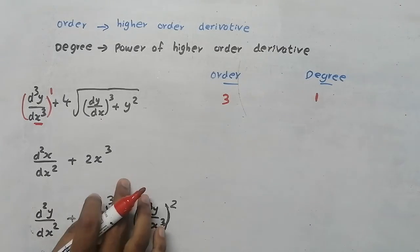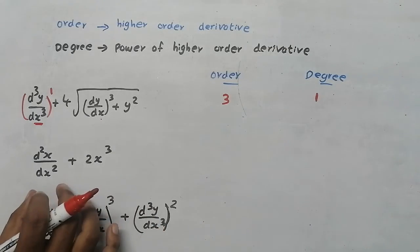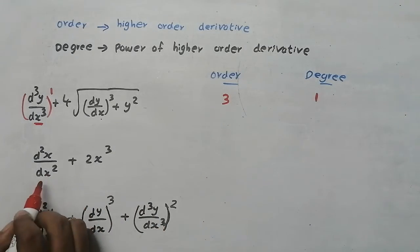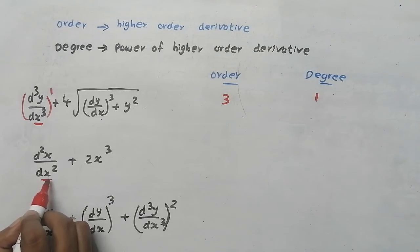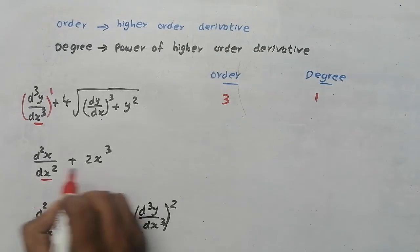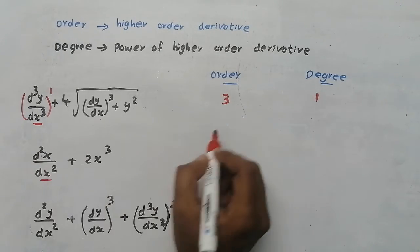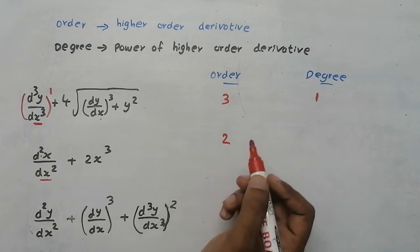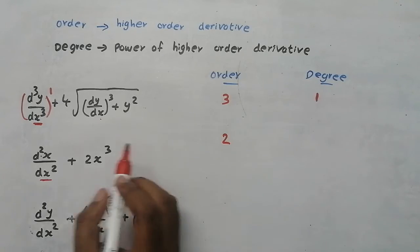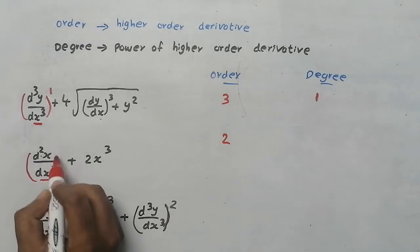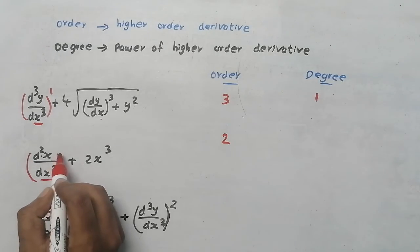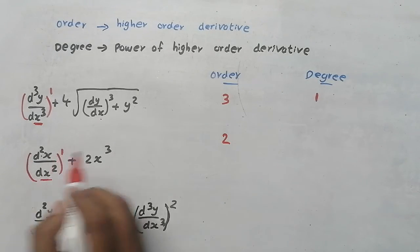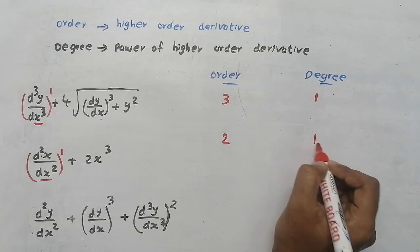Now in this question, what is the order? There is only one term, and the order is 2, so order is 2. Now what is degree? Degree is the power of the highest order. So here degree is 1.